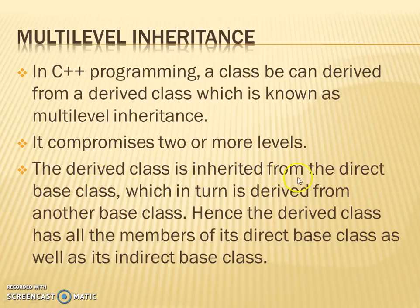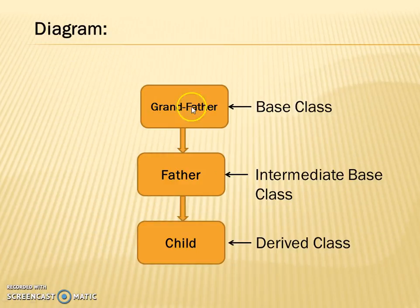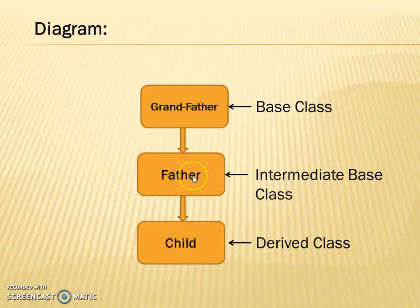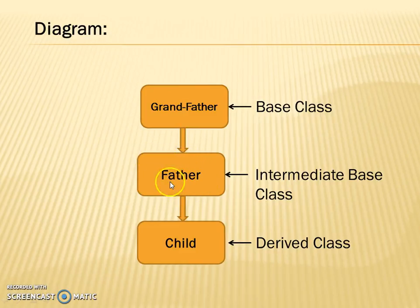The derived class is inherited from the direct base class, which in turn is derived from another base class. If you see the example of grandfather, father, and child: the child has derived some attributes or features from his father, and the father gets attributes or features from his father. So for the child, the base class becomes the grandfather and the derived class becomes the father. The father is an intermediate base class from which the child class is derived.